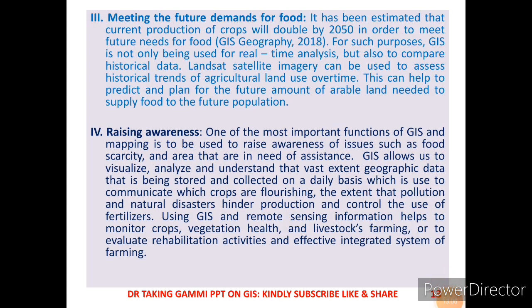The third application of GIS is meeting future demands for food. It has been estimated that current production of crops will need to double by 2050. GIS is used not only for real-time analysis but also to compare historical data. Land satellite imagery can be used to assess historical trends of agricultural land use over time, helping predict and plan for the future amount of arable land needed to supply food to future generations.